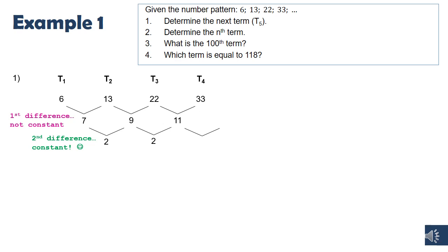So to work out the fifth term, I'm going to add 2 to my first differences. So I add 2 to 11 to get 13, and add 13 to 33 to get 46. Right, so the fifth term is therefore equal to 46.